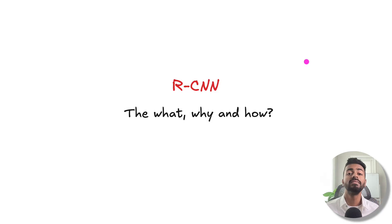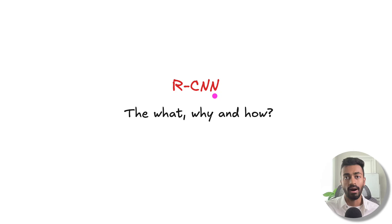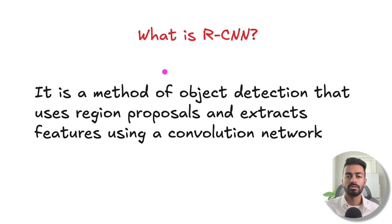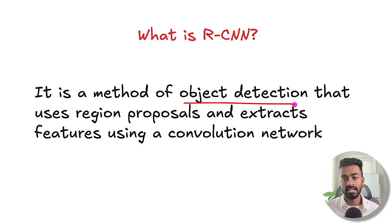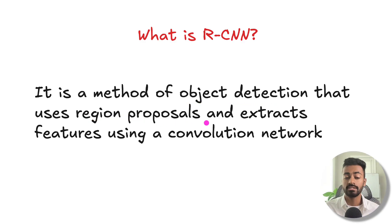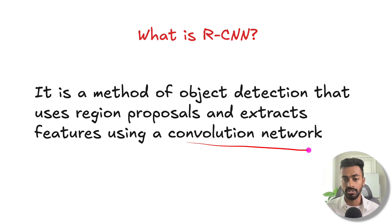Greetings fellow learners. In this video we are going to look at RCNNs — the what, the why, and the how. An RCNN is a method of object detection that uses region proposals and extracts features using a convolutional neural network.